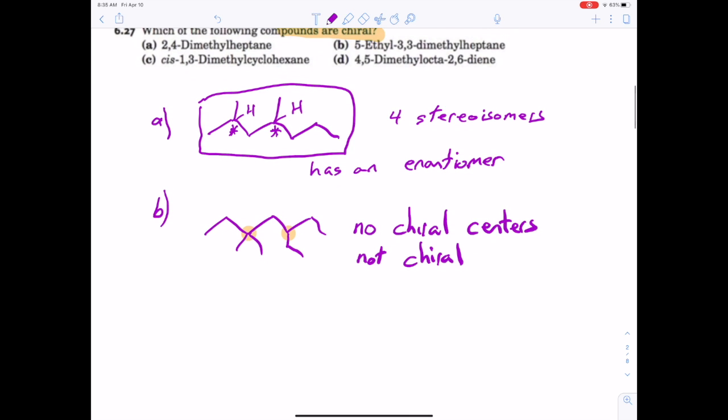What about c? Cyclohexane, and it says 1,3-dimethyl and it's cis, so I'll draw them coming up. I could have them both going up or both going down. Now there are two chiral centers, and those are right here and here where the methyl groups are.